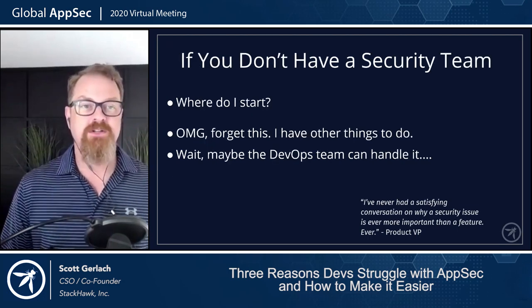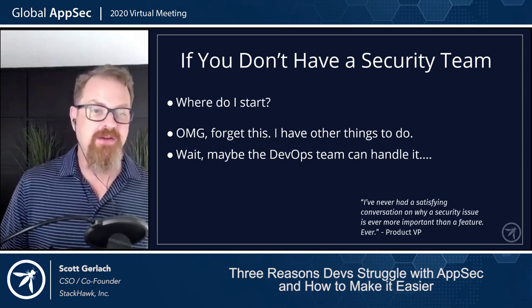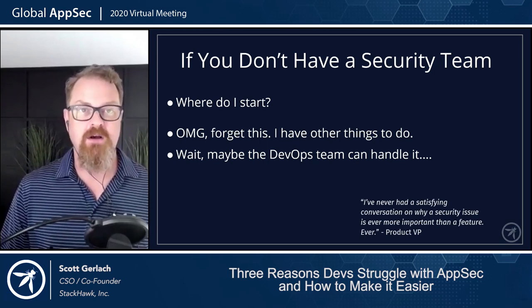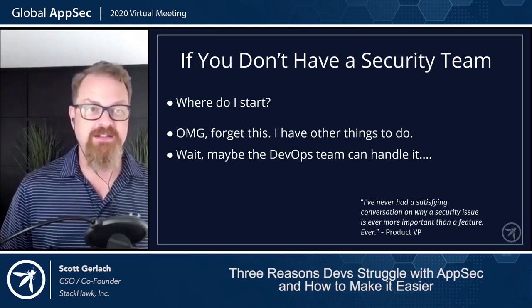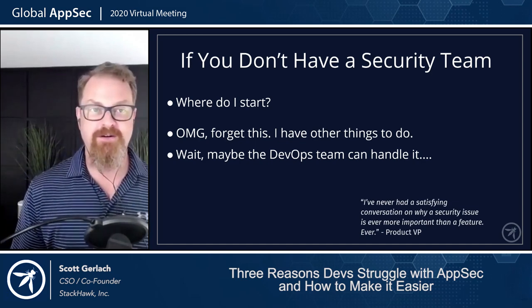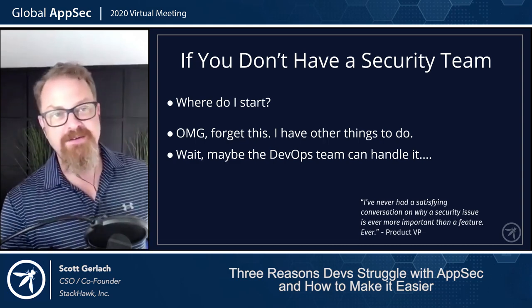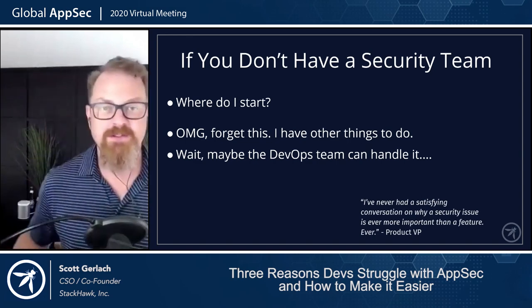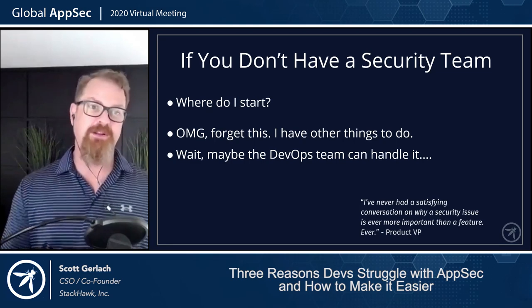And that's all if you have a security team. If you don't have a security team — if you're the CTO or VP of Engineering tasked with security at a smaller company — that can lead to thought statements like: where do I start? Oh my God, forget this, I've got other things to do that are more actionable and more important. Maybe that DevOps team can help me here. That's kind of the security team problem that's feeding this AppSec problem.